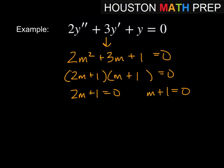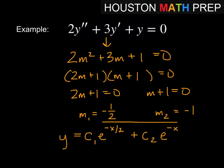And then if we solve this left-hand equation, we'll get the first value for m is going to be -1/2. When we solve the second value for m, we'll get -1. So then our general solution for the equation is going to be y = c₁e^(-x/2) + c₂e^(-x).